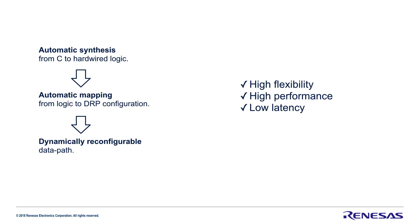But how will the DRP do what I want it to do? It all starts with C code. The next step is automatic synthesis from C language to hardwired logic, subsequently automatic mapping from logic to DRP configuration, and finally you get a dynamically reconfigurable data path.